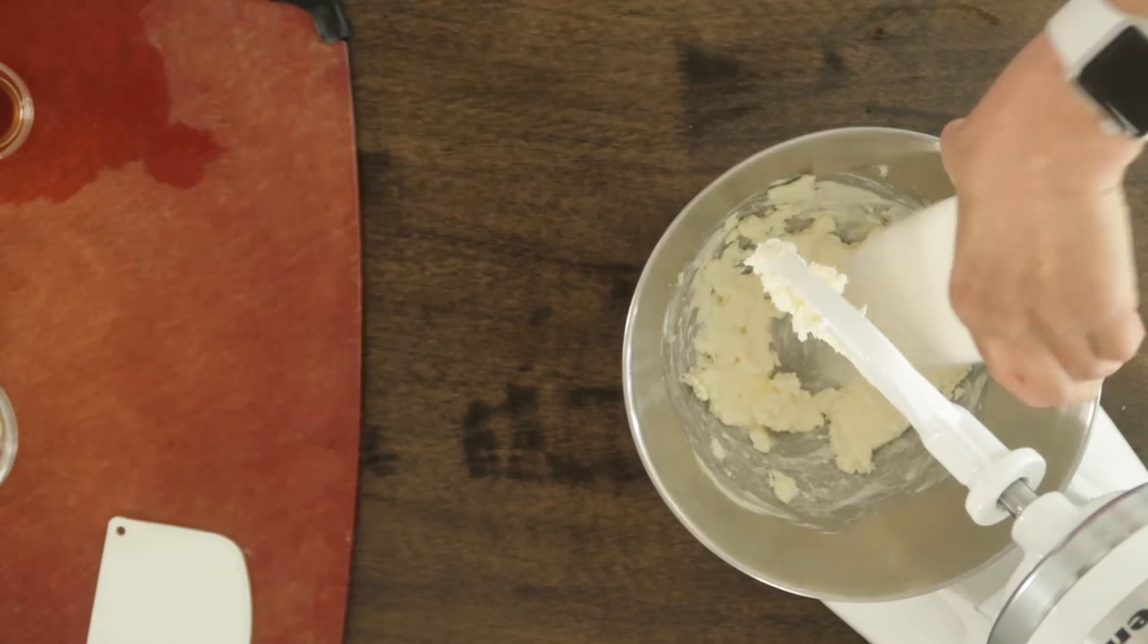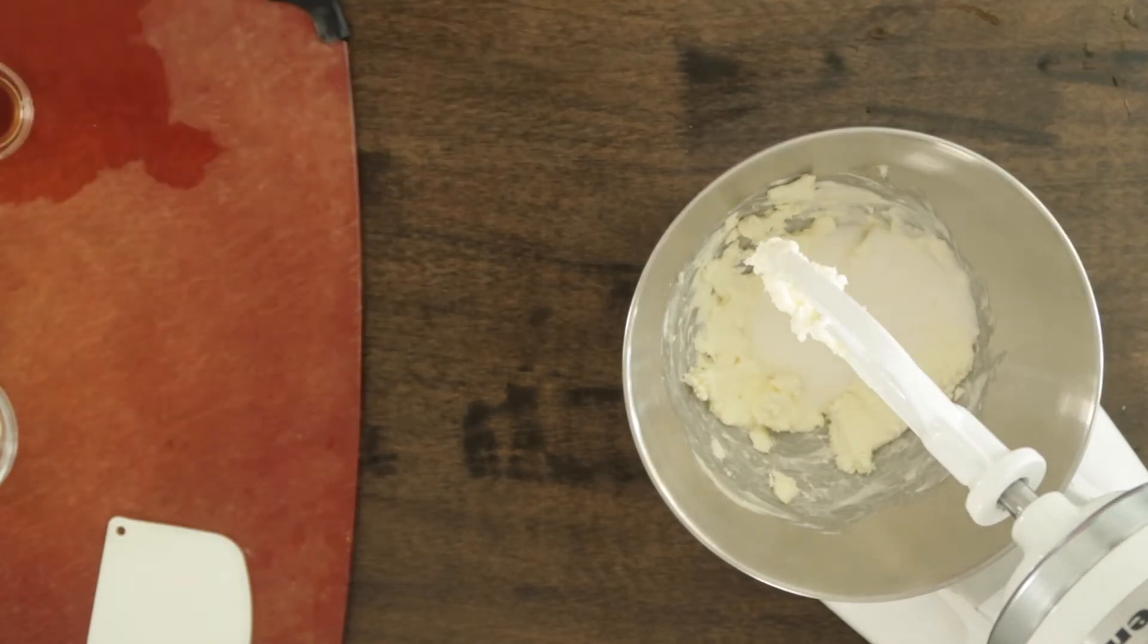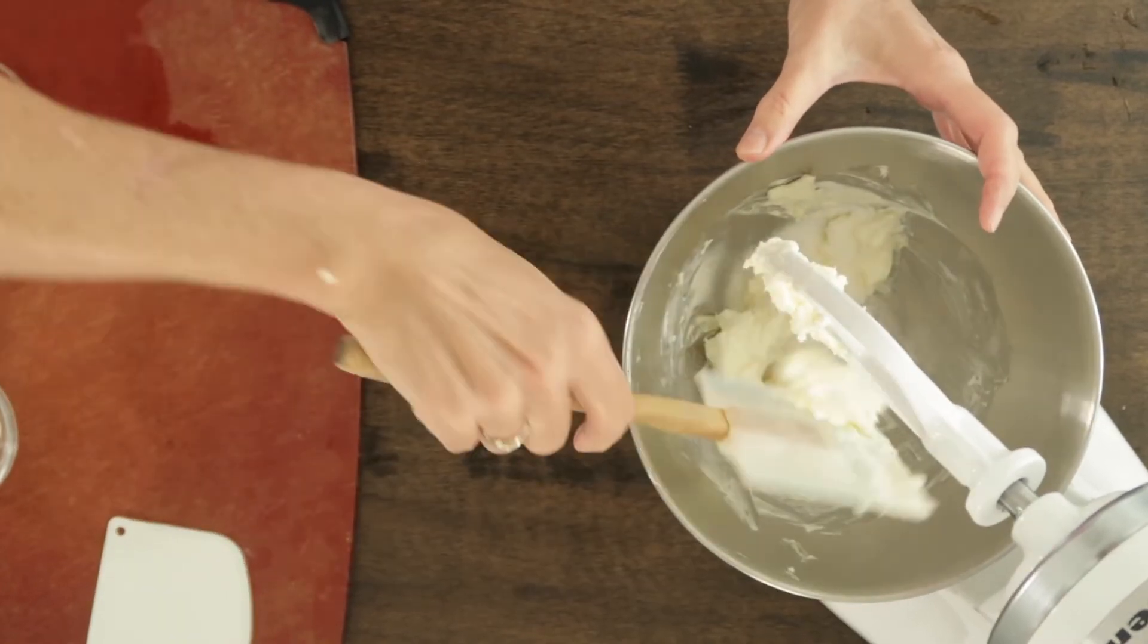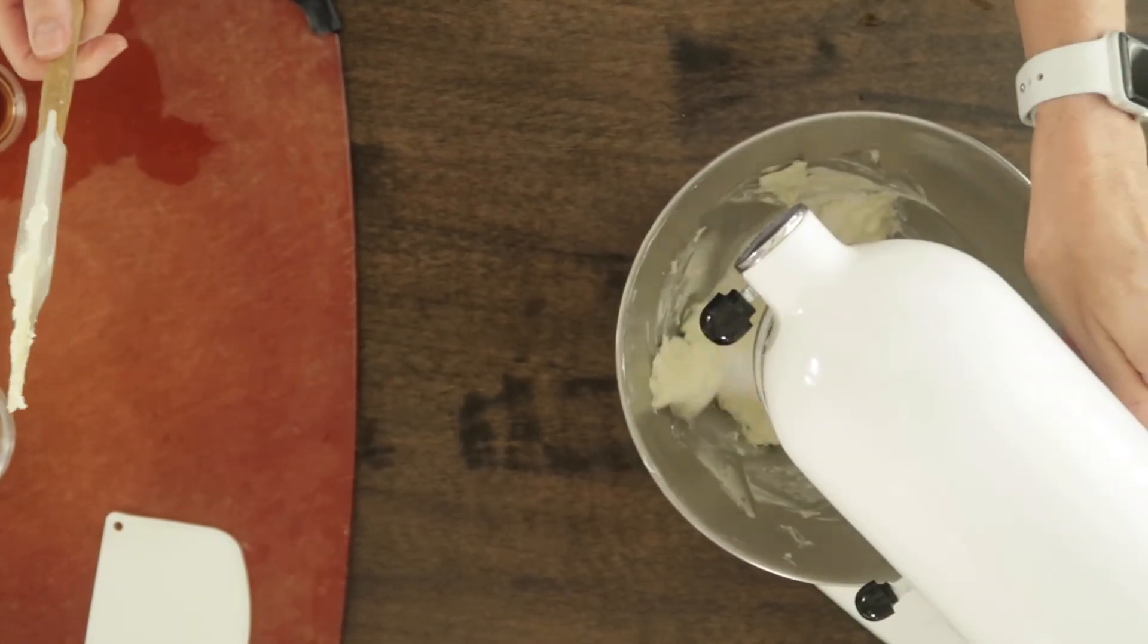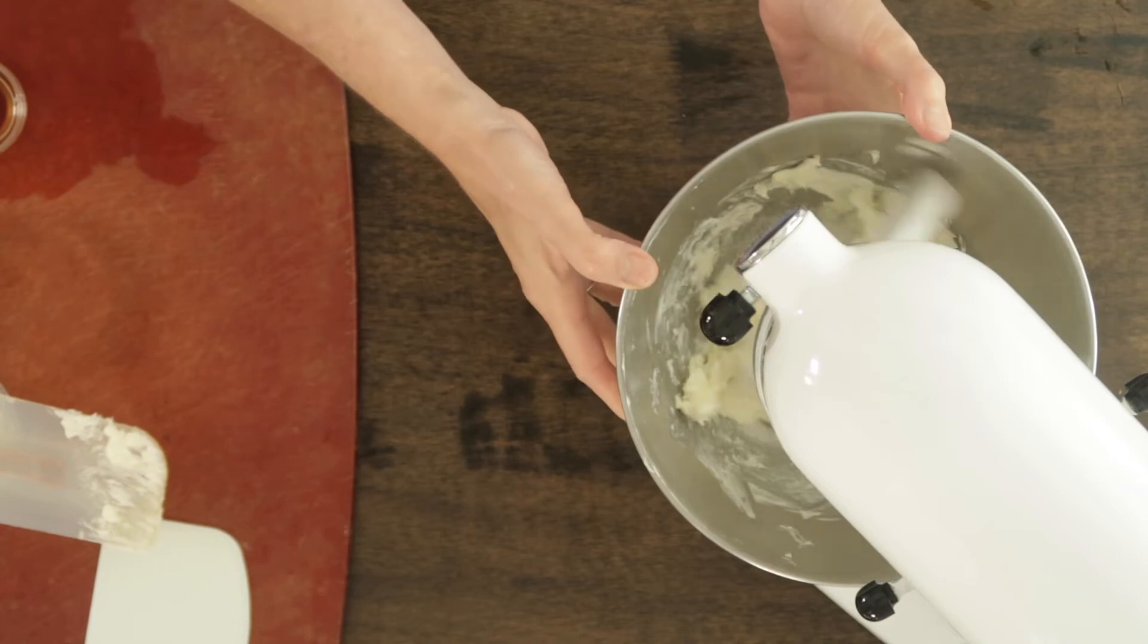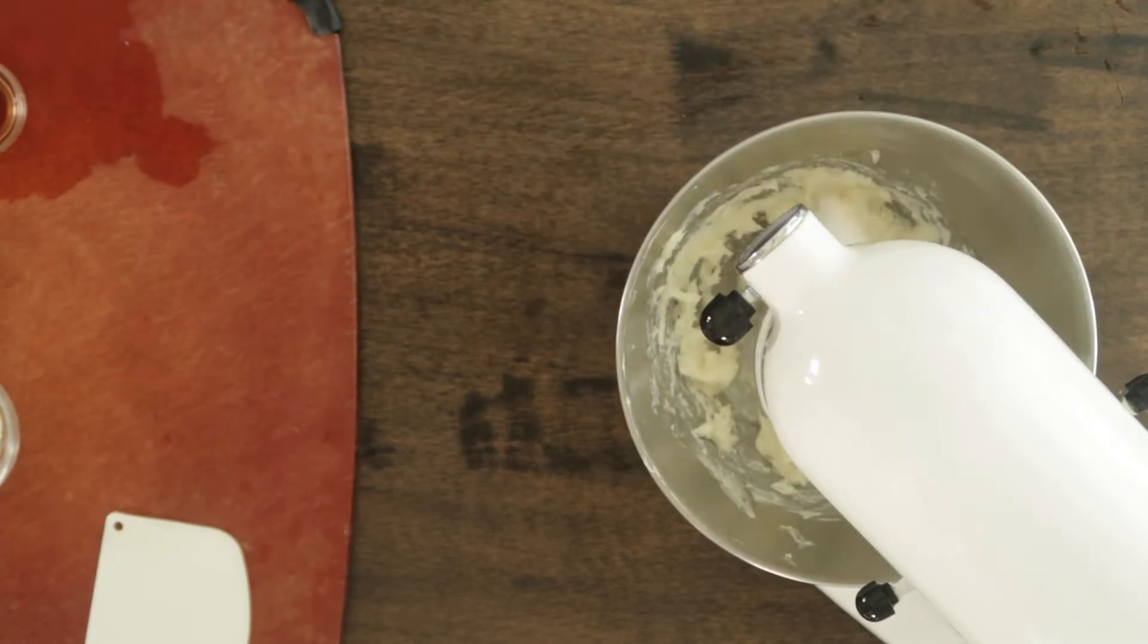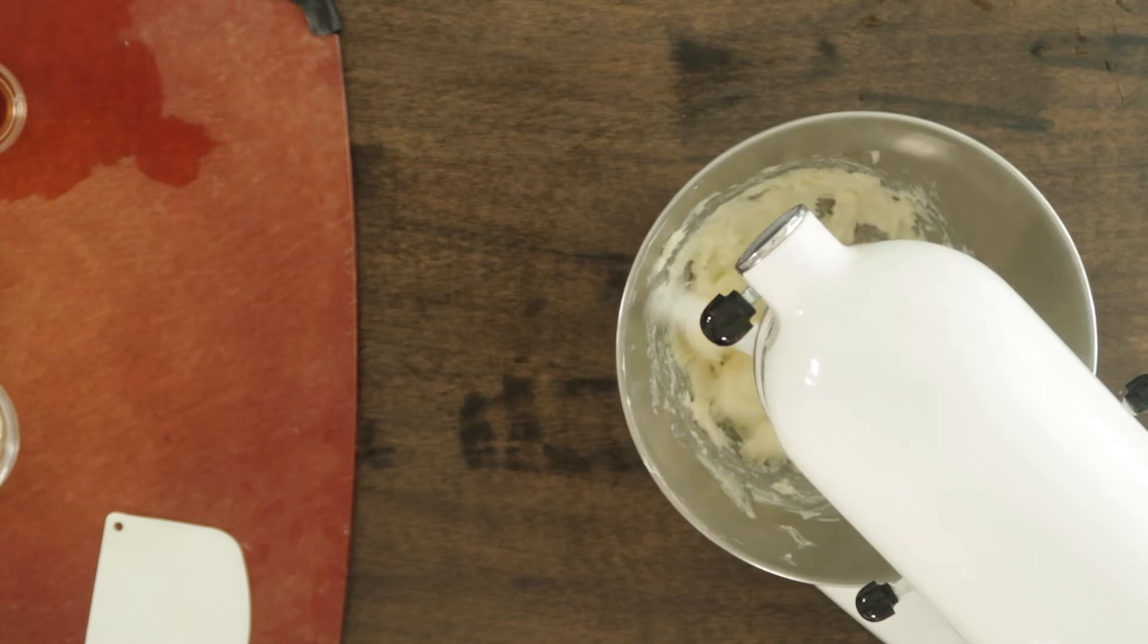Once the cream cheese and butter are smooth, we're going to add the sugar and mix until combined. And by the way, this clip has been speeded up so that it doesn't take forever. Once the sugar, cream cheese, and butter are combined, we're going to go ahead and add our eggs. Make sure to stop the mixer and scrape down before adding the eggs.